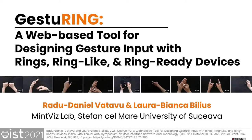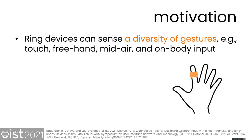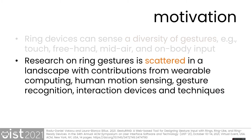We introduce in this paper GestuRING, a gesture dataset and tool for the web meant to support design of ring-based gesture input. We focus on ring devices because rings can detect a variety of gesture types, such as taps on the ring's surface, hand poses and mid-air gestures, but also body-referenced and on-body input.